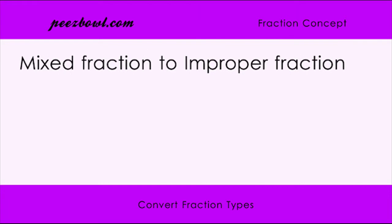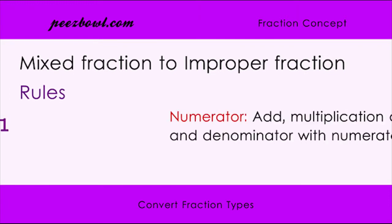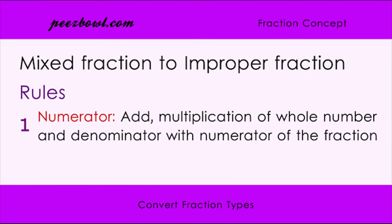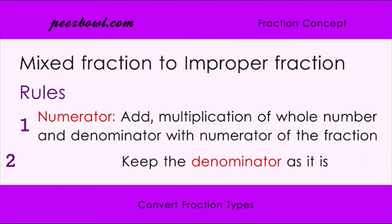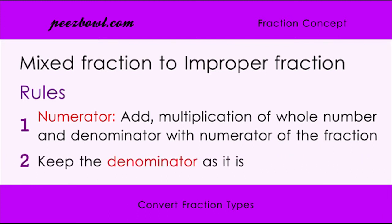Now let us understand how to convert a mixed fraction to an improper fraction. To convert a mixed fraction to an improper fraction, we will follow 2 simple rules. For the numerator place, we will multiply the whole number with the denominator of the fraction, and add this multiplication with the numerator of the fraction. And keep the denominator as it is.